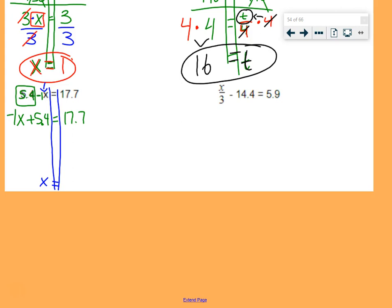So, now we can clearly see we're multiplying by negative 1 and we're adding 5.4. So, the first thing we need to undo is the positive 5.4, the adding 5.4. So, we're going to minus 5.4 on both sides. 5.4 minus 5.4 is 0. They cancel out, leaving us with negative 1 times x equals 17.7 minus 5.4 is 12.3.